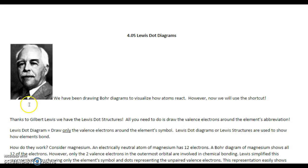Full outer shell in order to be stable. And that's why they react. But now we're going to do a shortcut. Thanks to Gilbert Lewis, we have the Lewis dot structures. All you need to do is draw the valence or outer electrons around the element's abbreviation. That's it.